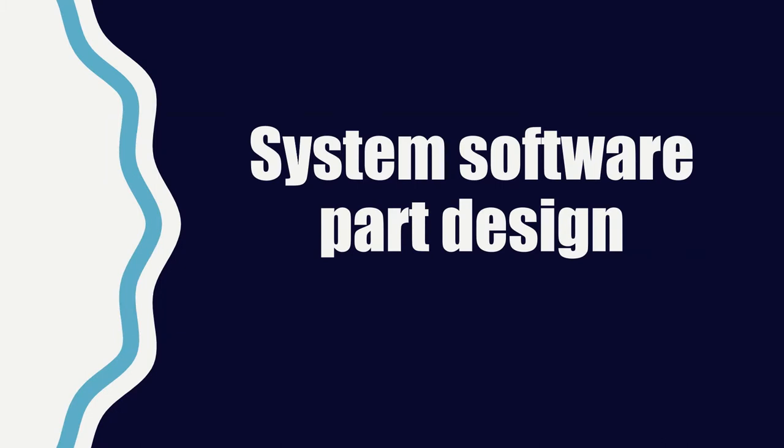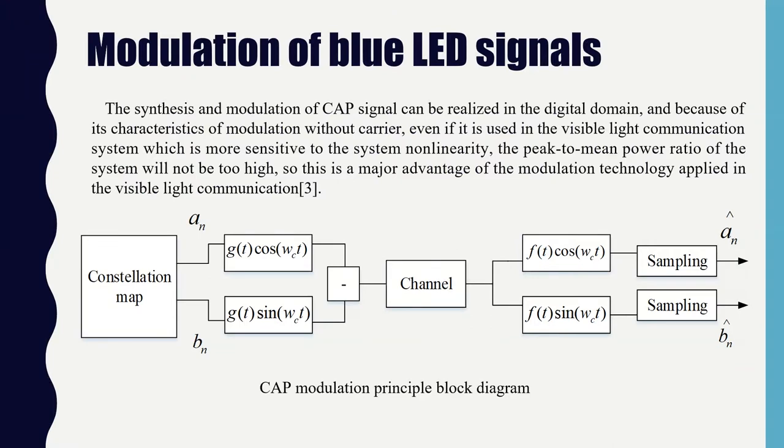The fourth part is the system software design. CAP modulation technology is based on the development of QAM technology. Its characteristic is that shaping filters and matched filters are used at the transmitting and receiving ends to generate and separate in-phase and quadrature signals, so that the generated CAP signal has no carrier in the signal band. This modulation method is called carrier-less modulation.